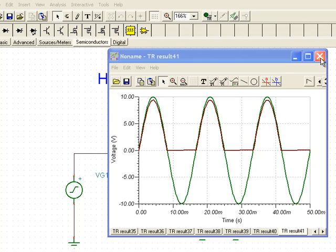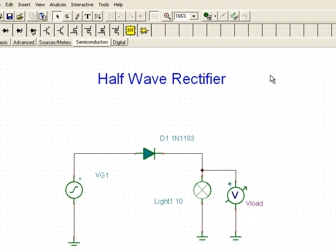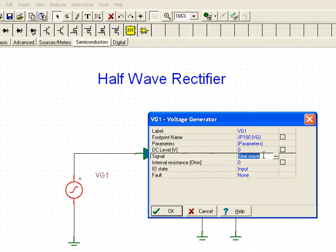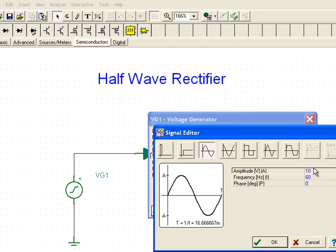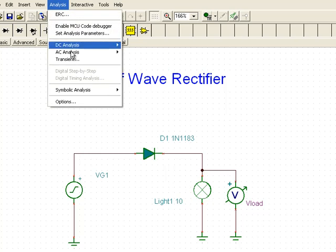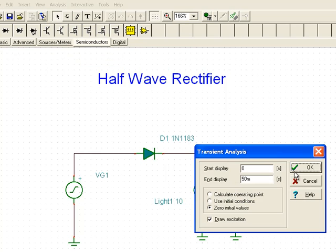If we want to get a better look at the voltage across the diode, we can drop the voltage of the source. So I'll go into sine wave, and we'll change this from 10 volts peak to 1 volt peak. And then we'll go back to analysis and run the transient analysis again.